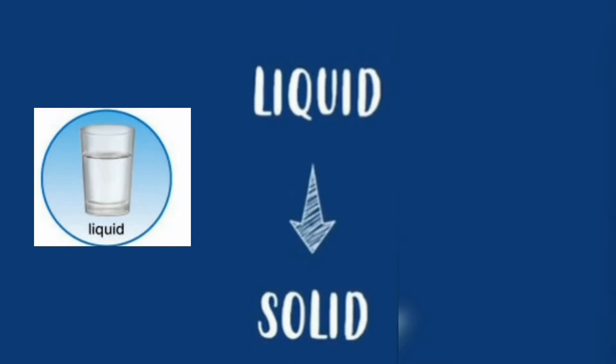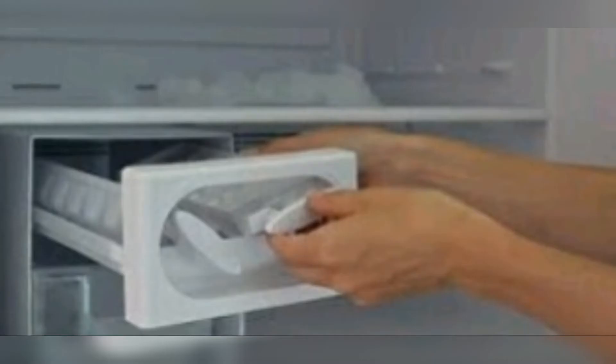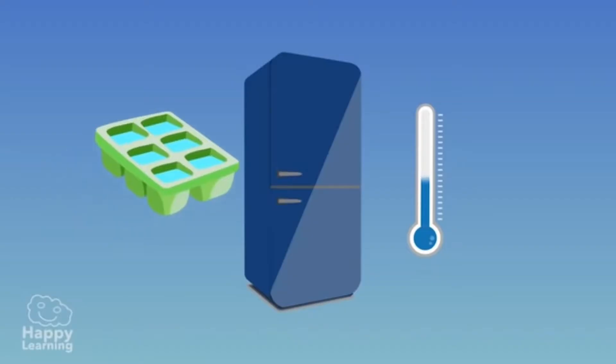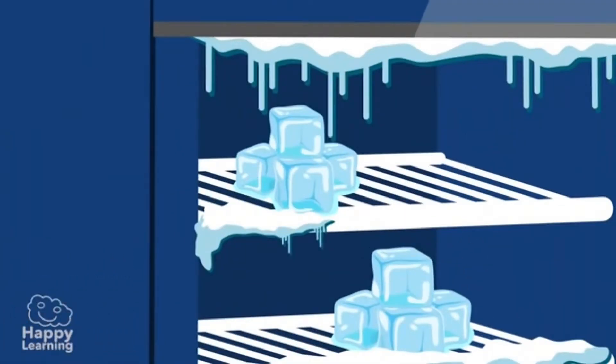Changing from liquid to solid: when we put water in the refrigerator, it loses heat and changes to ice. The process is called the freezing process. The freezing point is 0 degrees Celsius.